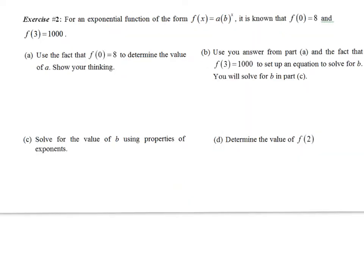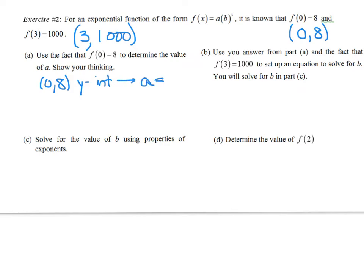In exercise number 2, we also want to find an exponential equation f(x) equals a times b to the x. This time I'm given two ordered pairs: when the input is 0, the output is 8; when x is 3, y is 1000. Whenever we know the y-intercept, f(0) equals 8, our y-intercept always tells us our a value. Since f(0) equals a times b to the 0, and b to the 0 is 1, f(0) equals a — so a must be 8.